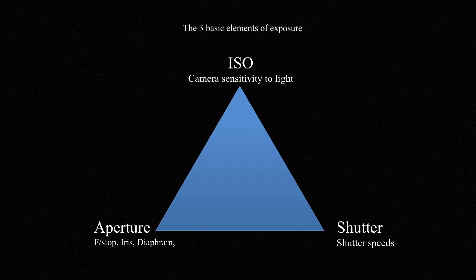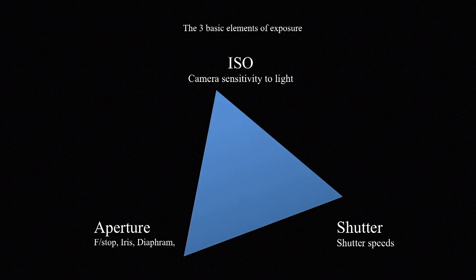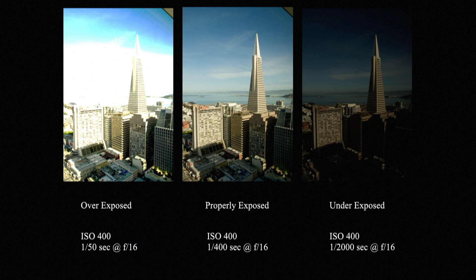If the aperture and the shutter are not balanced, the exposure will be either too dark or too light. Changing the ISO, which is the camera's sensitivity to light, can help correct an exposure problem, but it's not the ideal solution. In the three pictures we see, the center exposure is correct. It has good detail in the brightest areas called the highlights and good detail in the dark areas called the shadows.